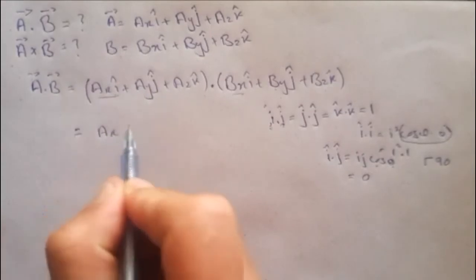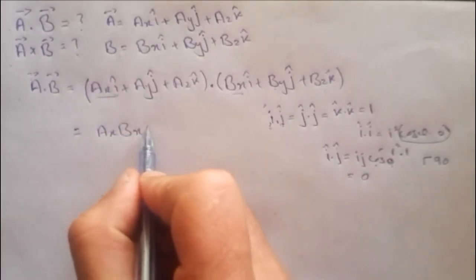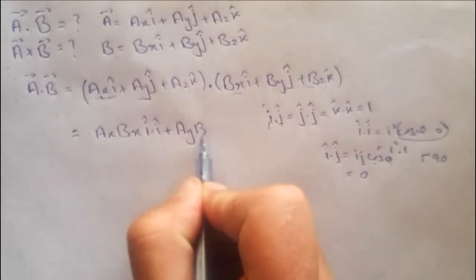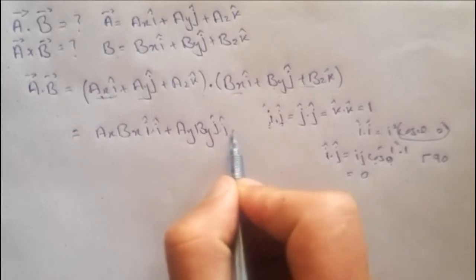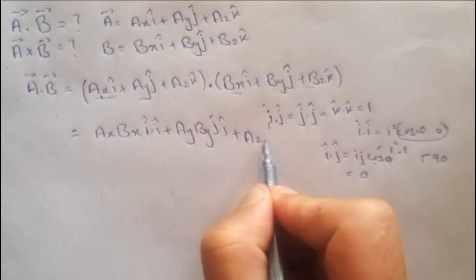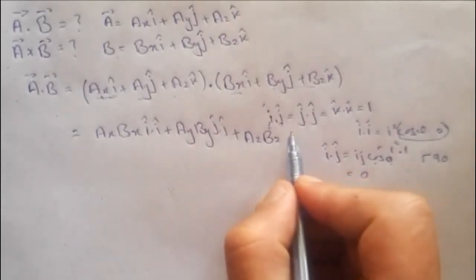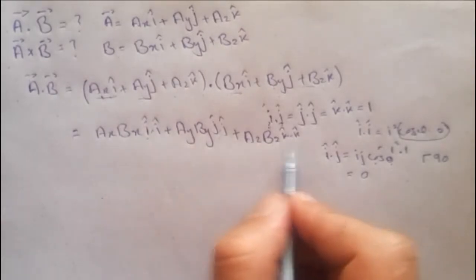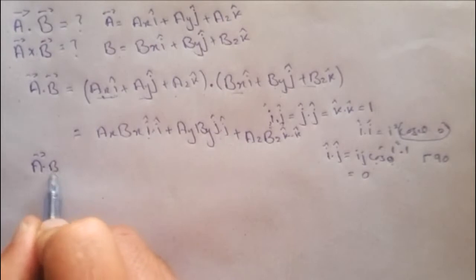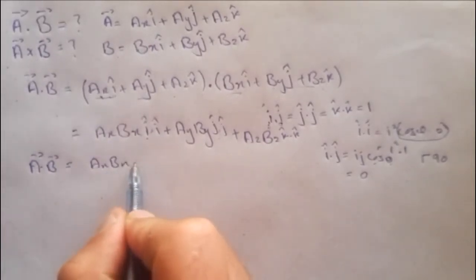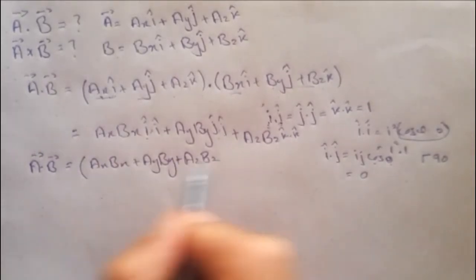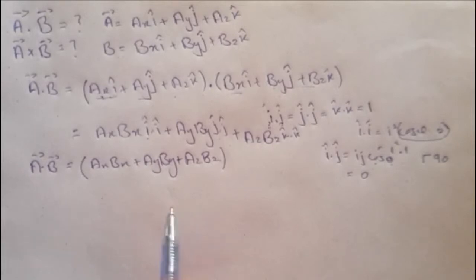This simplifies to ax·bx times (i·i), plus ay·by times (j·j), plus az·bz times (k·k). Since each of those dot products equals one, we are left with a·b equals ax·bx plus ay·by plus az·bz. This is a scalar quantity, and this is the dot product between the two vectors.